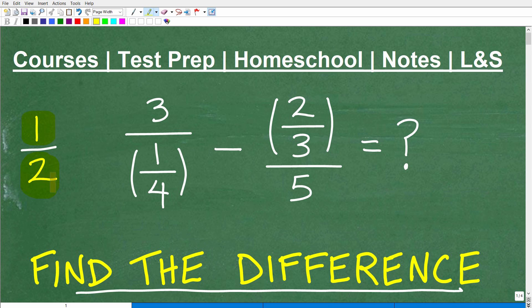A complex fraction is where the denominator or the numerator, or both the numerator and denominator can be a fraction. This particular fraction right here, we have a numerator of three, but its denominator is a fraction one-fourth. Anytime you have a fraction involved in another fraction, something like this, you're dealing with a complex fraction.